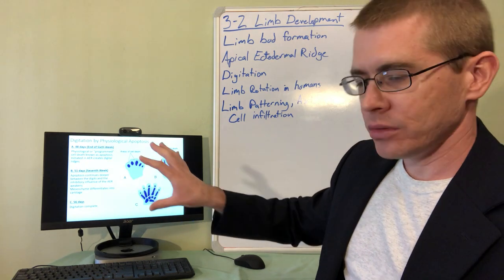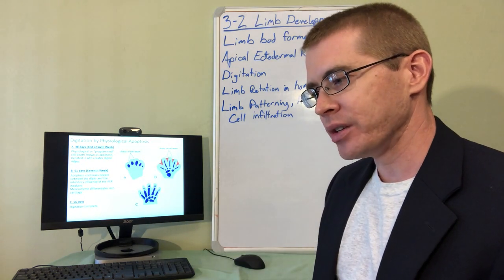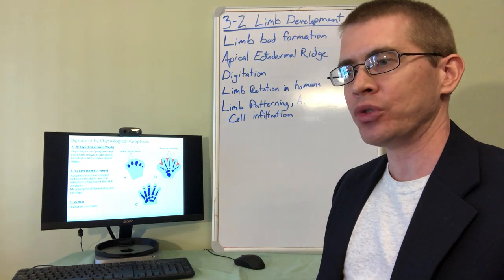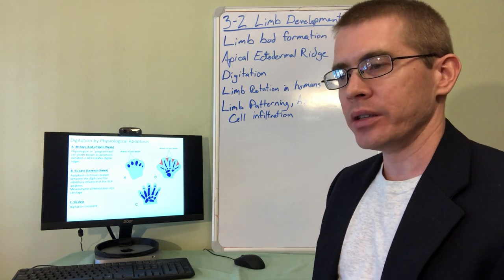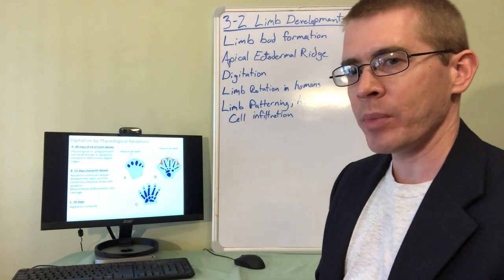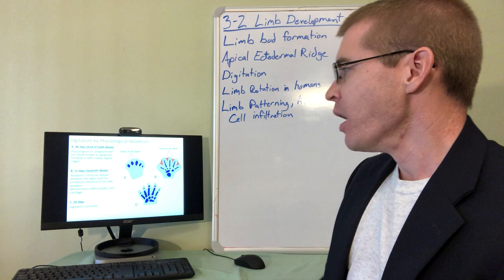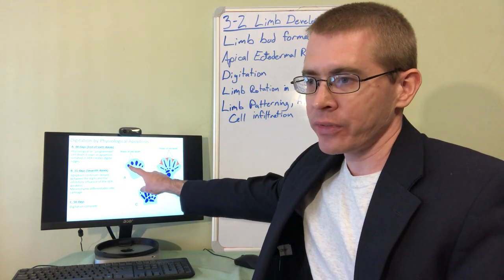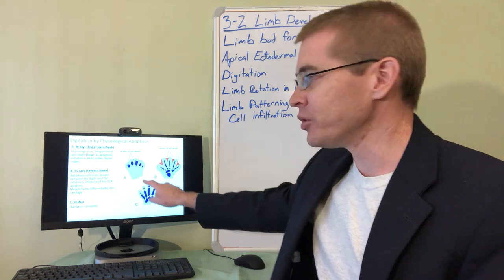So once the limb bud has formed, we have to form the individual bones and muscles within the limb bud itself. And so quickly here I'll talk about the process of digitation. In digitation the chondrocytes have condensed and formed the bone models of the digits.